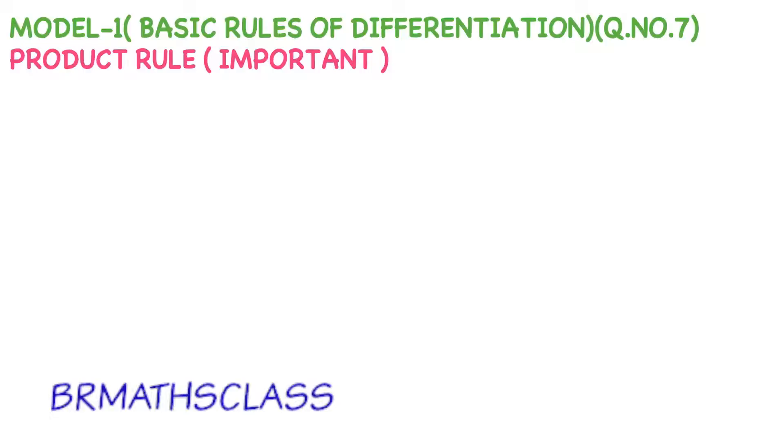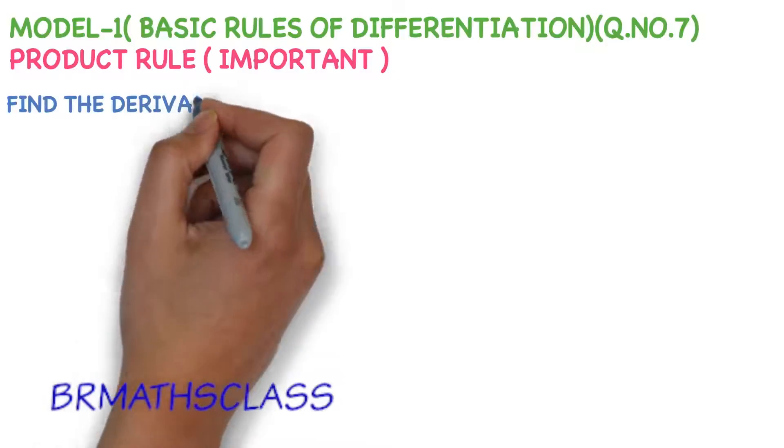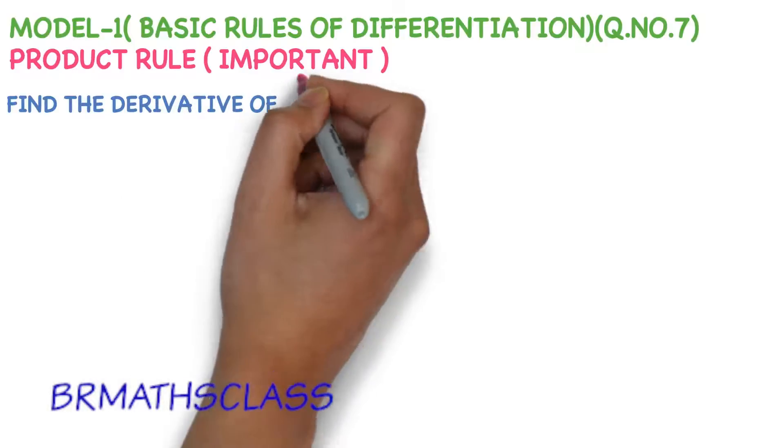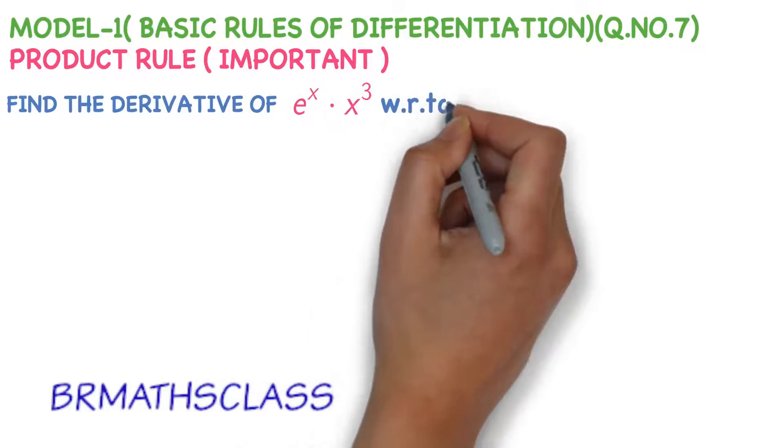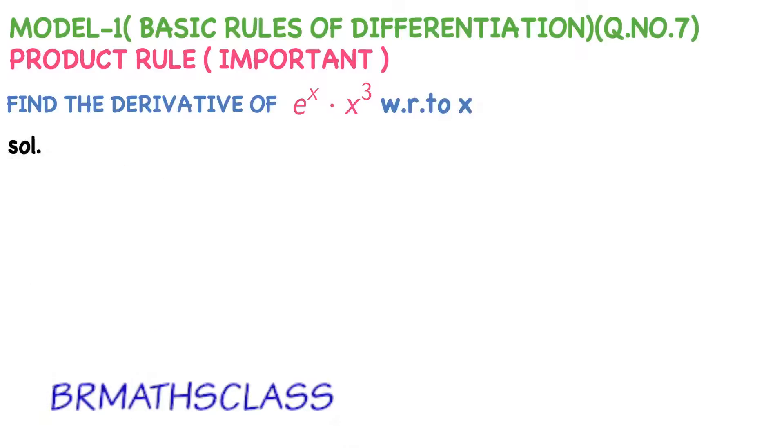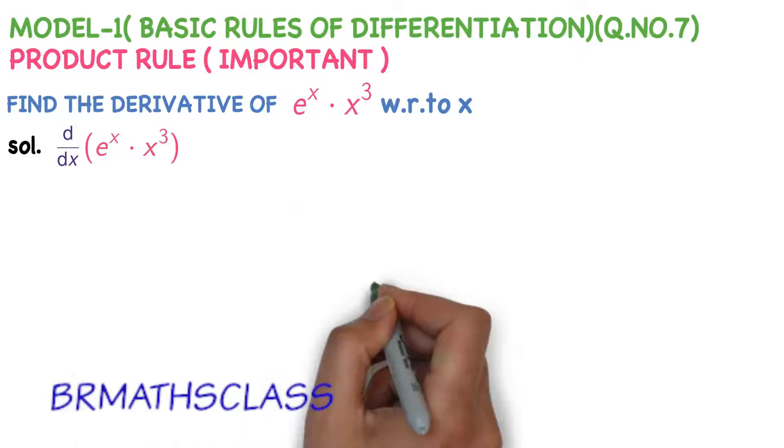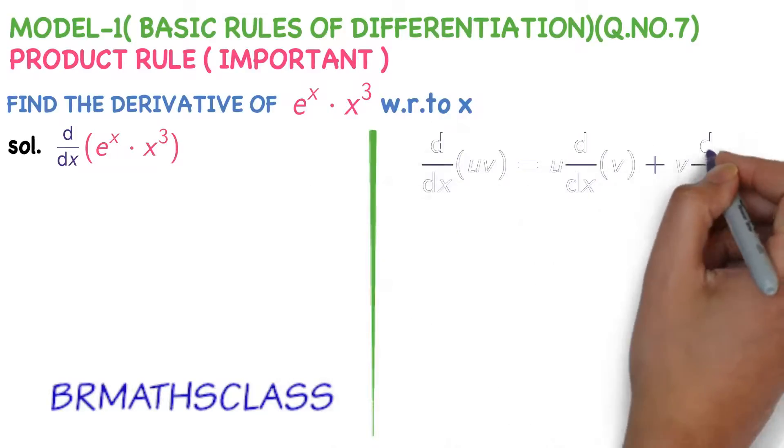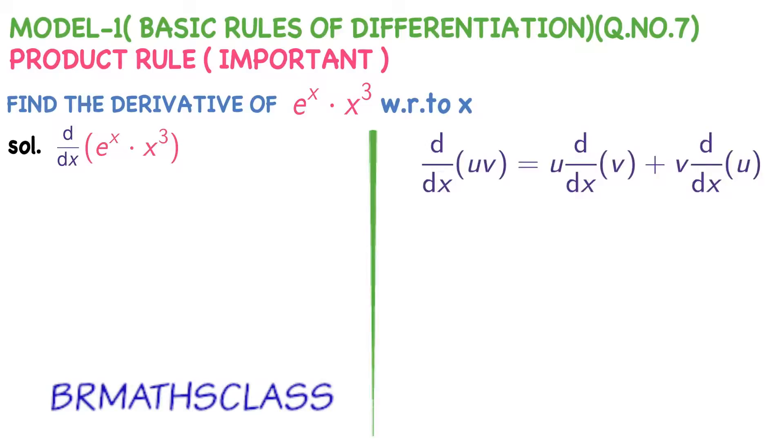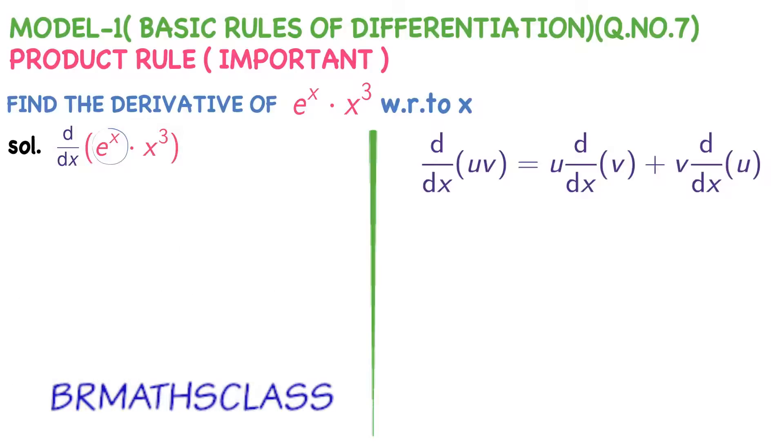Product of two functions derivative we will do by using this formula. First, we will take a question. Find the derivative of e power x into x cube with respect to x. That means, we need to find derivative of e power x into x cube. We will write it as d by dx of e power x into x cube. What is product rule?